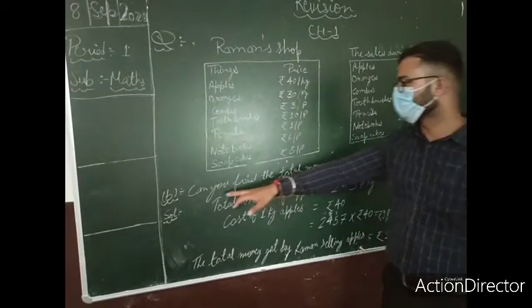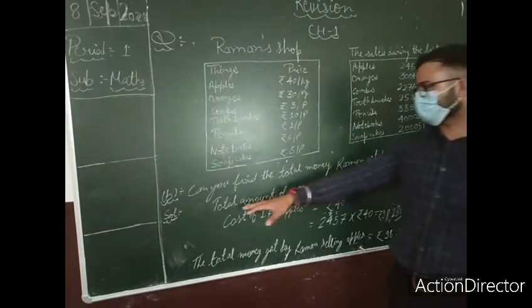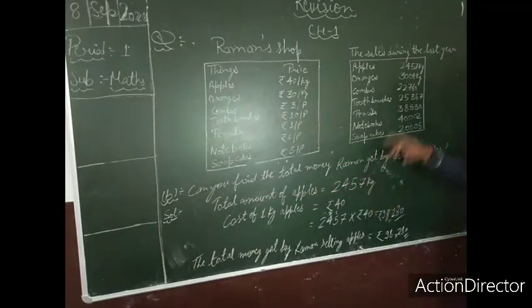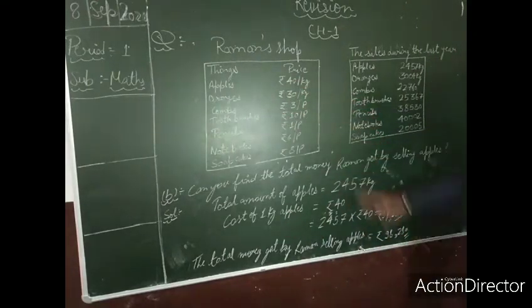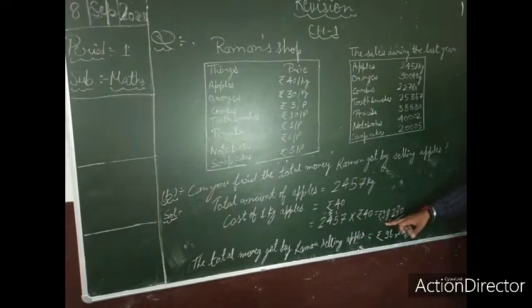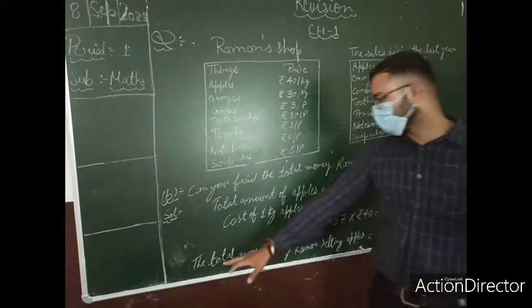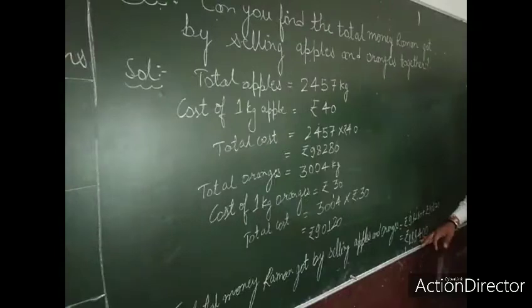Now here we solve the second question: can you find the total money Raman got by selling apples? First we write the total amount of apples — 2457 kg — and the cost of 1 kg apples, which is 40 rupees. We multiply these two: 2457 multiplied by 40, and we get 98,280. So the total money Raman got by selling apples is 98,280 rupees.